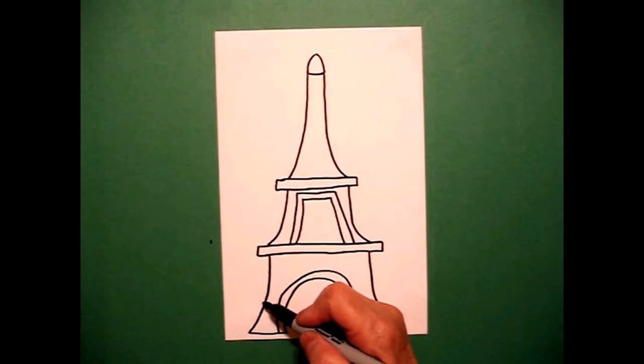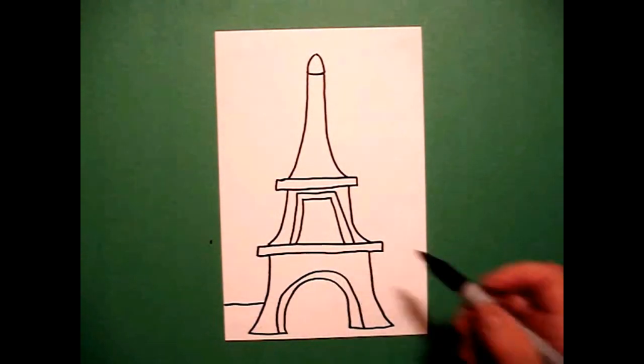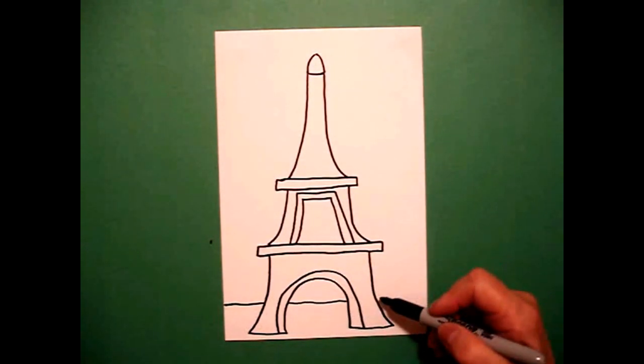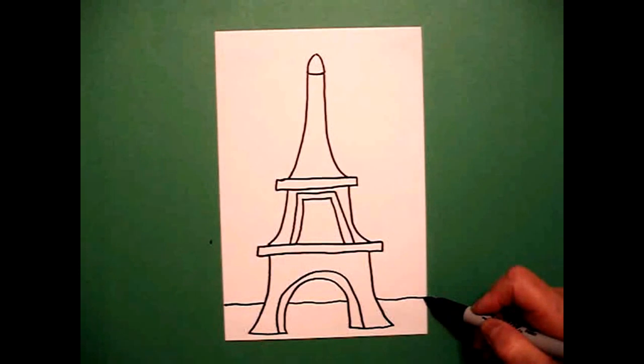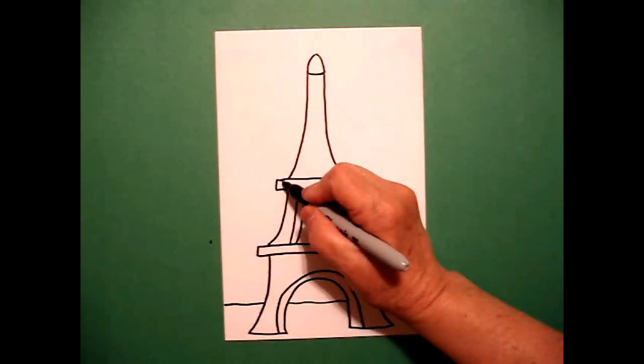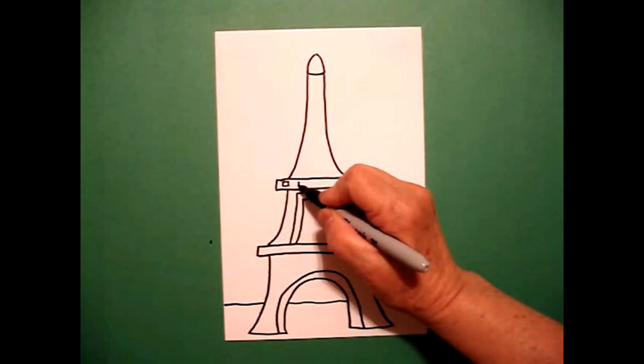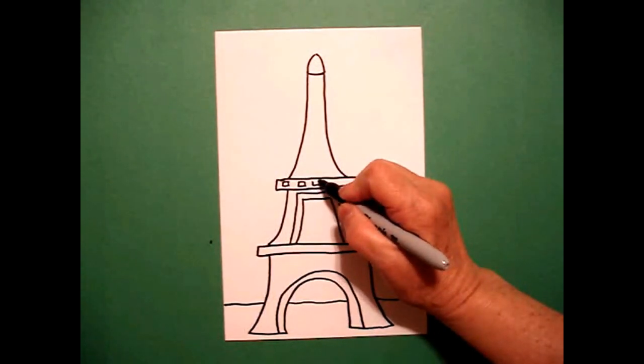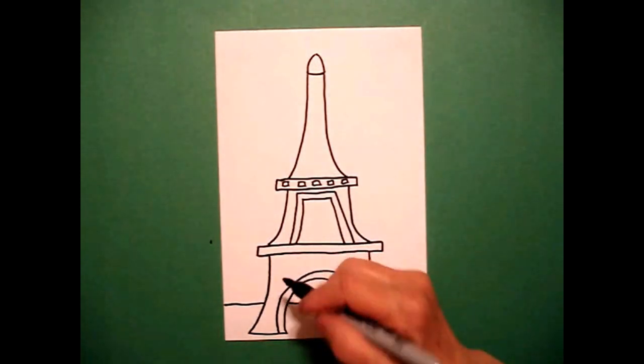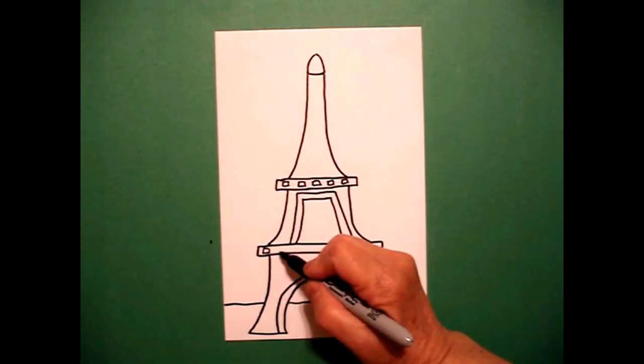I'm going to draw what we call horizon line so it doesn't look like my Eiffel Tower is floating in outer space, so I draw straight lines, jump over, straight lines to the end of the paper. Inside each of my little skinny rectangles, I'm going to draw some boxes or little baby squares all the way across. And on this skinny rectangle, I'm going to do the same thing, little boxes or squares all the way across.